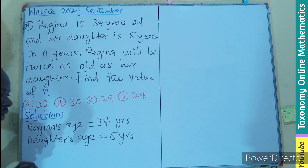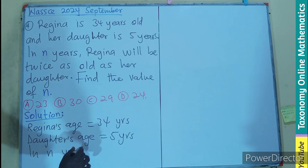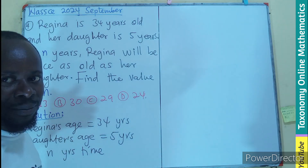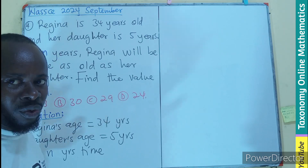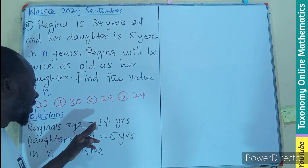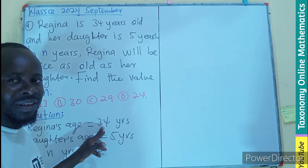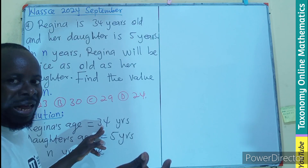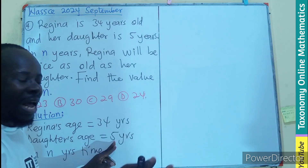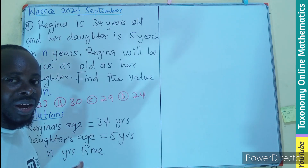In n years' time, let us imagine that in two years' time, what will happen to their ages? In two years' time, Regina will become 34 plus 2, that's 36. In two years' time, the daughter will become seven years.